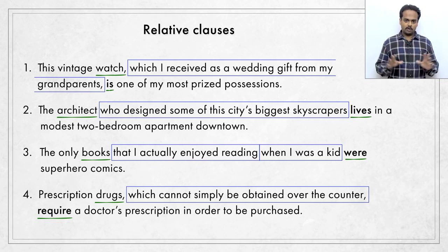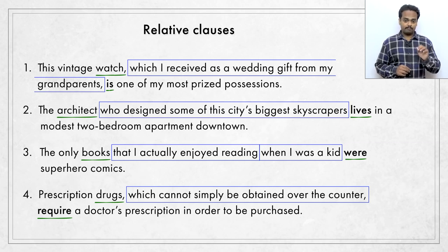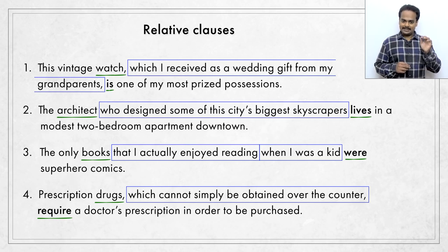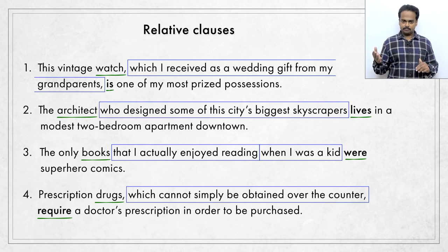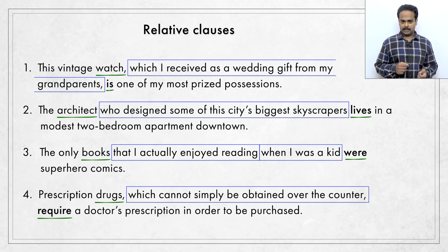So looking at all of these sentences, how do we identify relative clauses? Watch out for the relative pronouns who, which, that, where, when, etc. Once you identify a relative clause, check to see whether that clause comes between the subject and the verb. If it does, just ignore the clause. Look at the subject and decide whether it is singular or plural and then use the correct form of the verb based on that. If you want to know why two sentences here have commas and two sentences don't have commas, see my lesson on punctuation. I'll leave a link in the description below.